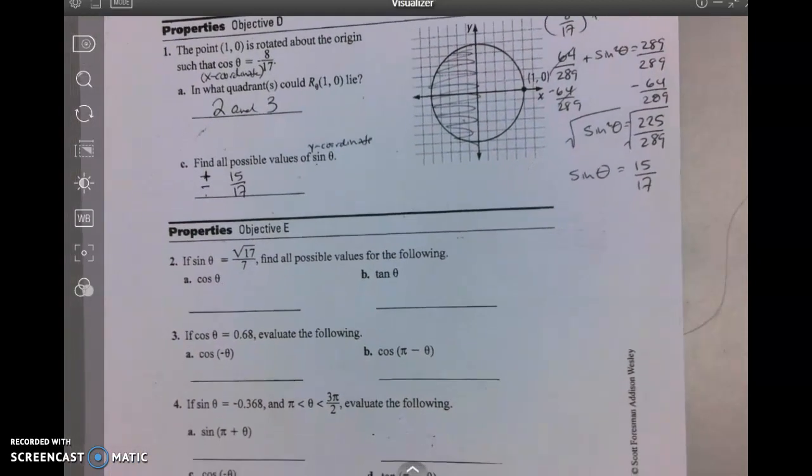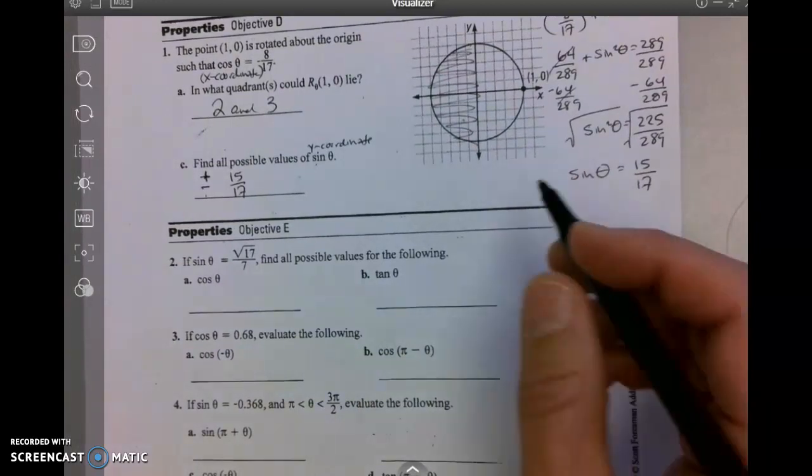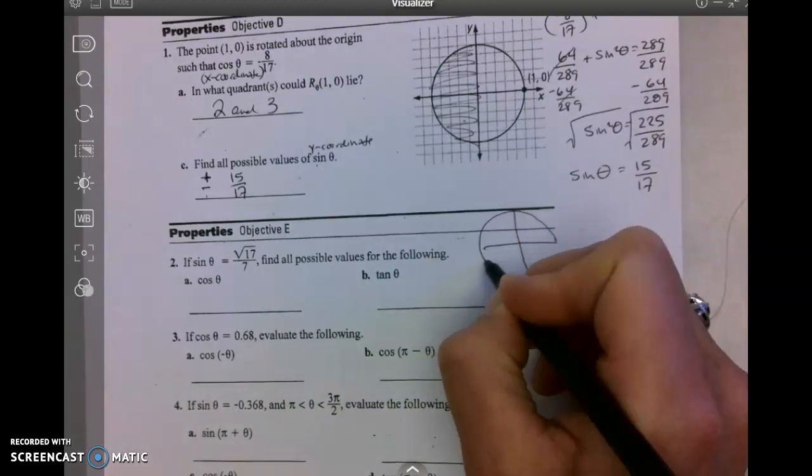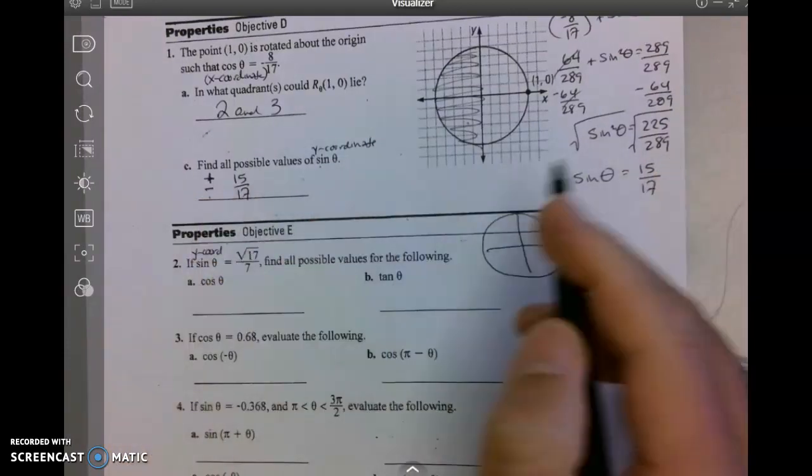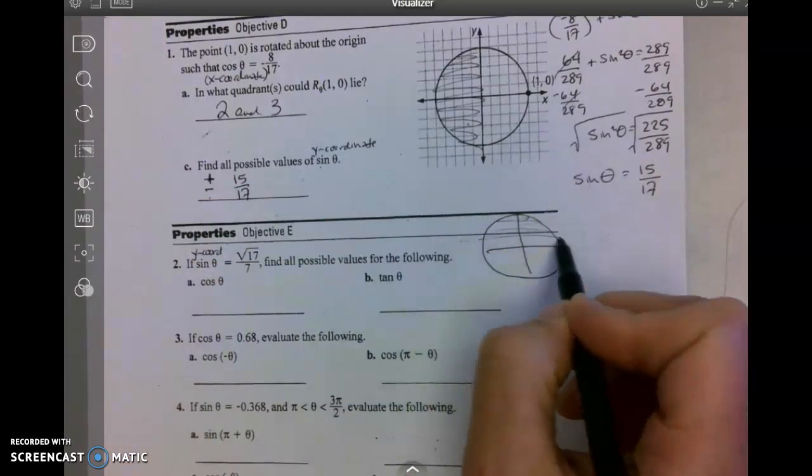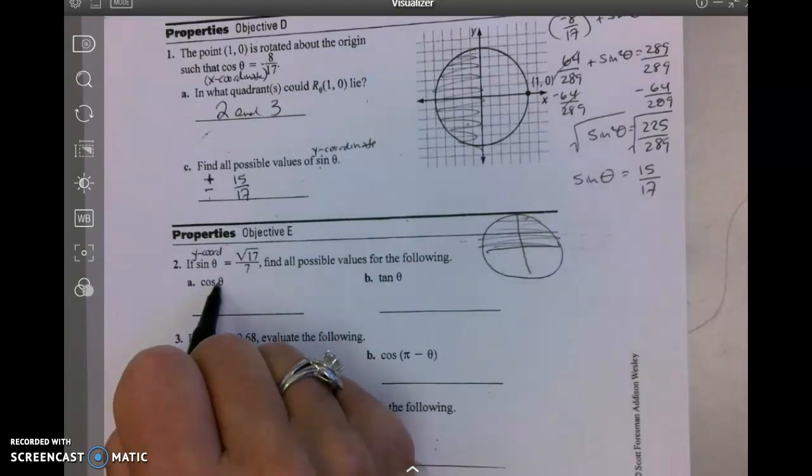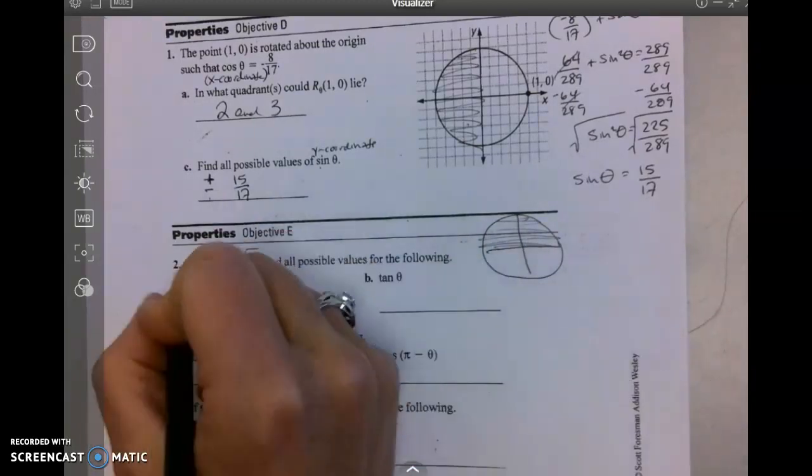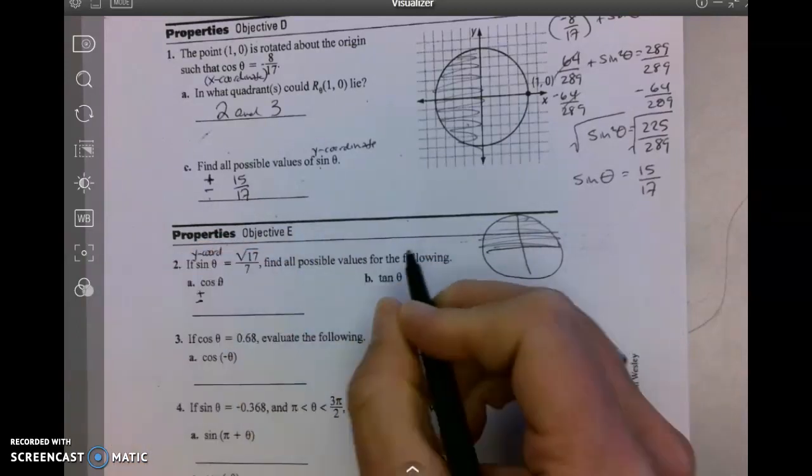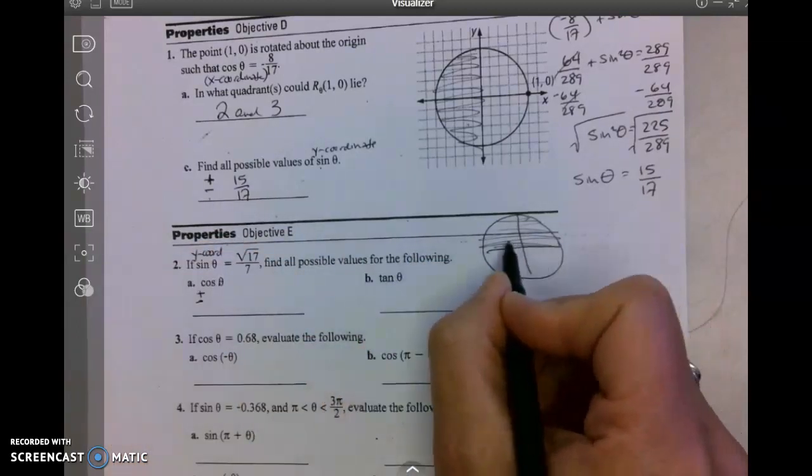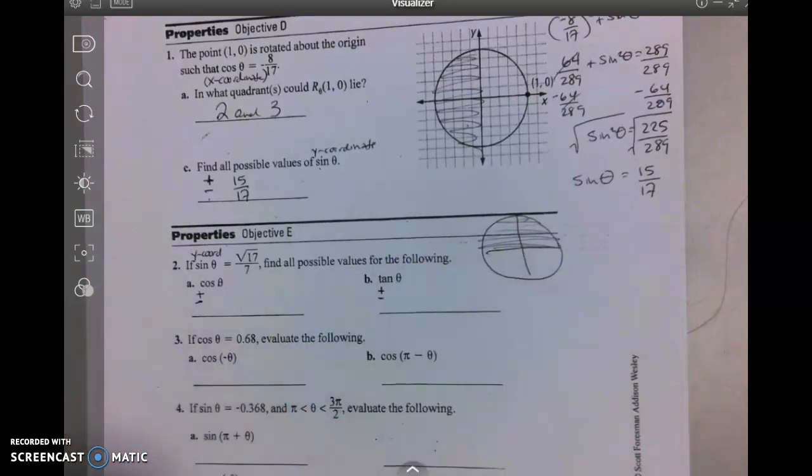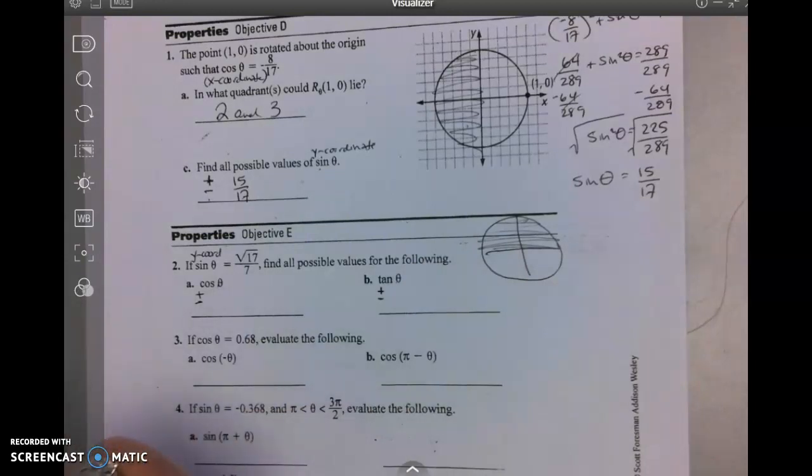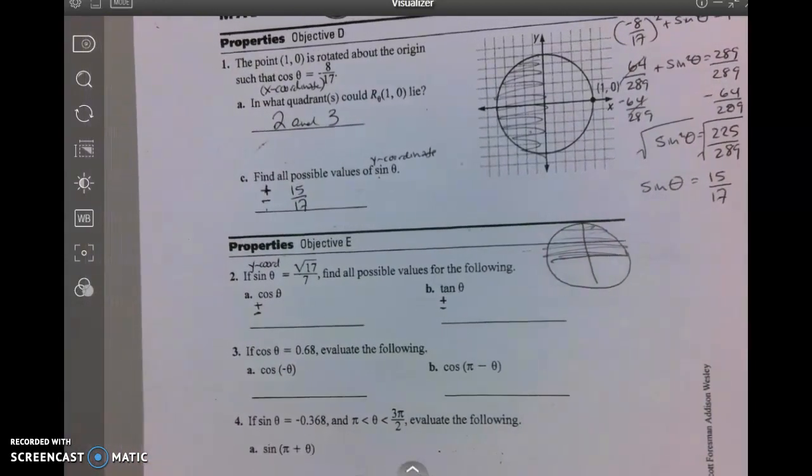Let's go to number two. Sine of theta is the square root of 17 over 7. I've got to think about this. Sine is y. Y is positive up here in quadrants one and two. For cosine, the x coordinate is positive here and negative here, so plus or minus. Tangent is positive here and negative here, plus or minus. And I've got to find them.